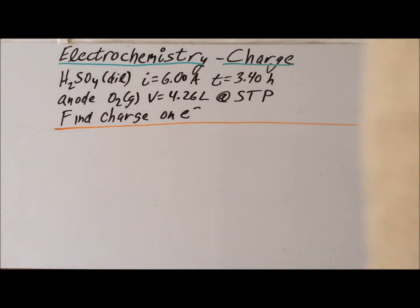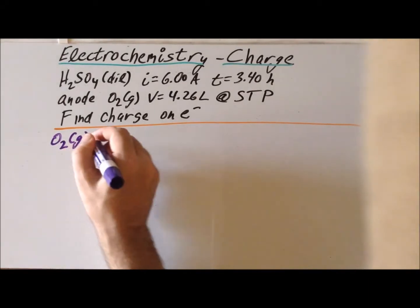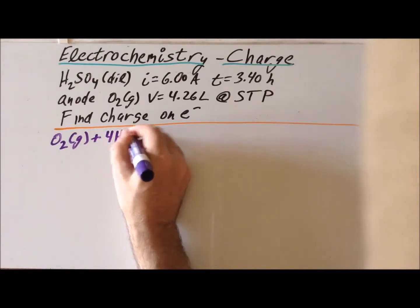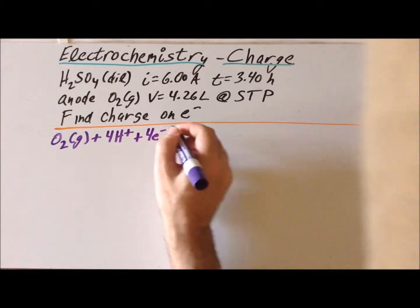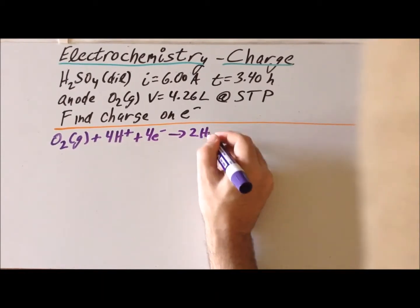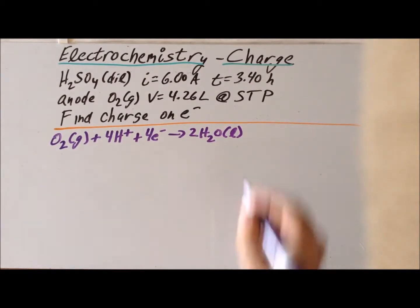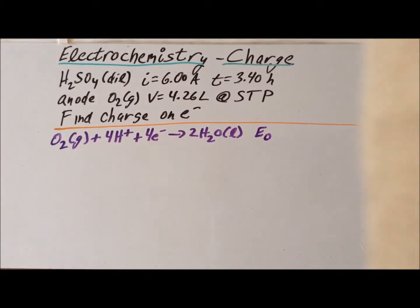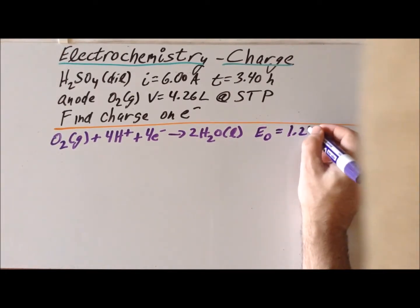The relevant half-cell reaction that we are going to be concerned with in this problem: we have O2 gas reacting with 4 H+ ions plus 4 electrons to give us two water molecules as liquid. And we note that if we look in the table, that the standard reduction potential E sub zero for this half-cell reaction is 1.23 volts.